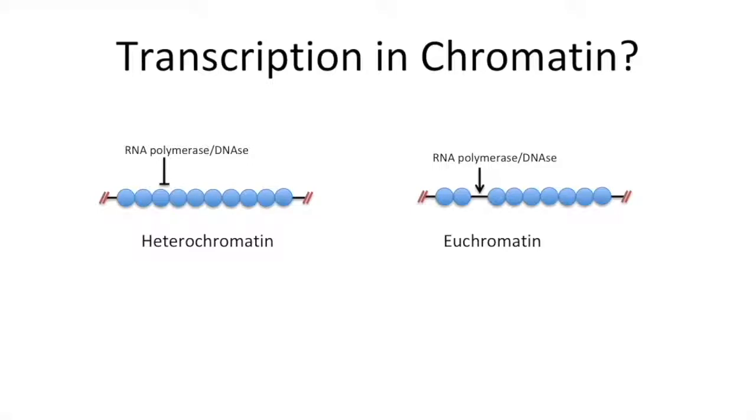Due to this structure, RNA polymerase cannot access the DNA and transcription does not occur. So this brings up the question: how can DNA be accessed by RNA polymerase when nucleosomes are present?